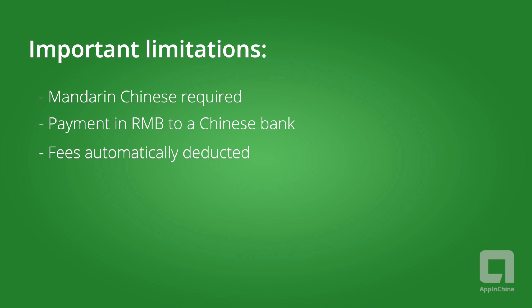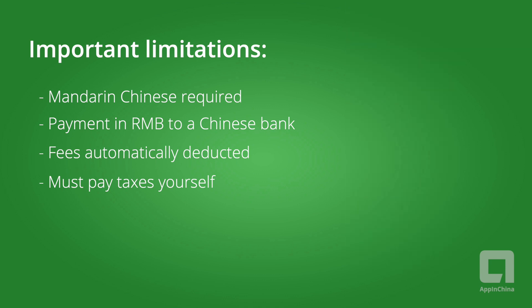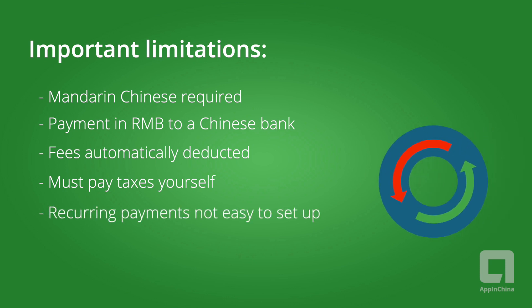Each payment system will automatically deduct a per-transaction fee. However, neither company will keep track of sales and withholding taxes that you are required to submit to the Chinese tax authority each year. We recommend finding an experienced tax specialist to do this for you. It's also important to note that neither WeChat Pay nor Alipay usually allow you to set up recurring payments. If you sell a subscription-based service, you will need to either ask for special approval or devise your own way of reminding the user to renew their subscription.